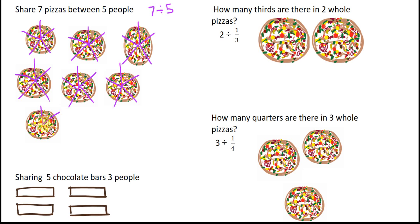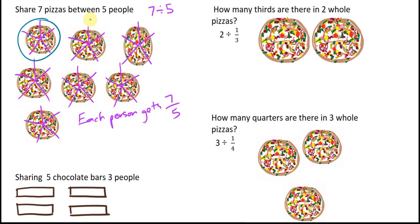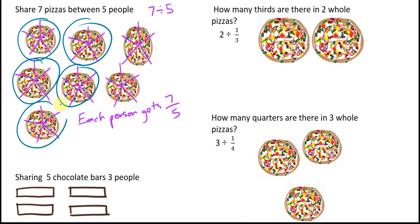Once we've divided up our 7 pizzas, we can see that each person gets 7 fifths. Another way of looking at it is if we look at dividing off our whole pizzas — at least each person is going to get one whole pizza. Then if I look at my final two pizzas, each person will get one fifth of each of those two pizzas. So another way of looking at it is that each person would get one whole pizza and two fifths of the final two pizzas. These two representations are equivalent.